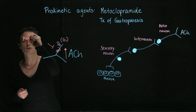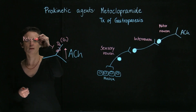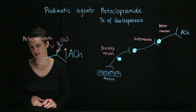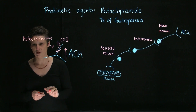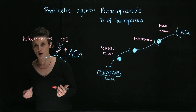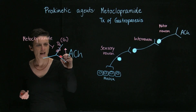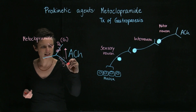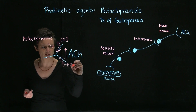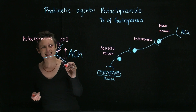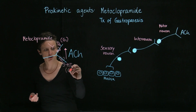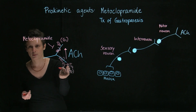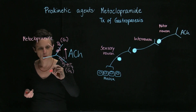As a consequence of blocking the D2 receptor, we get more acetylcholine released from the motor neuron, which helps facilitate GI motility. That's exactly what metoclopramide does — it is a blocker of the D2 receptor, which leads to an increase in acetylcholine. But metoclopramide is a more complicated drug with other targets. Another receptor found here, also a G-protein-coupled receptor, is a serotonin receptor.